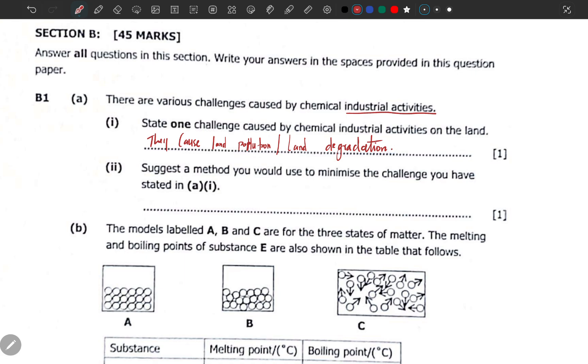Part ii: suggest a method you would use to minimize the challenge that you've stated. Based on the challenge, suggest a method you would use to minimize that same challenge. For example, when it comes to land pollution, let's say you are just throwing litter everywhere, plastics and so forth.